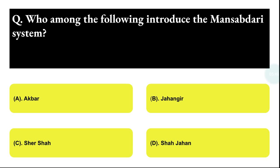Next question: who among the following introduced the Mansabdari system? Option A: Akbar, Option B: Jahangir, Option C: Sher Shah, Option D: Shah Jahan. The correct answer is option A, that is Akbar.